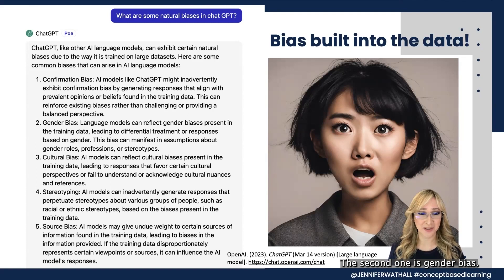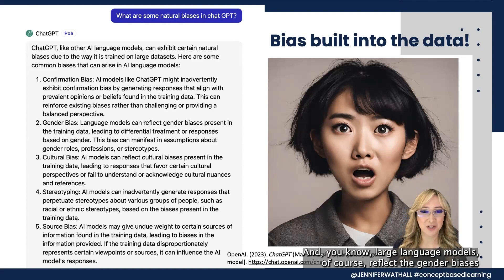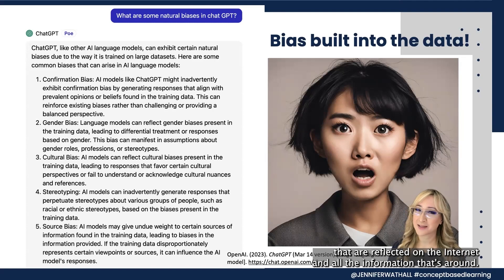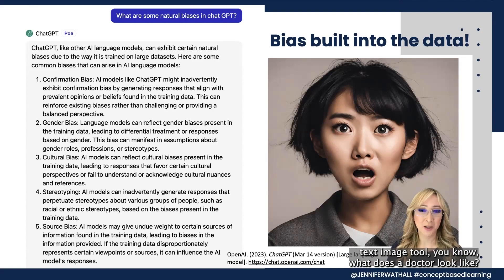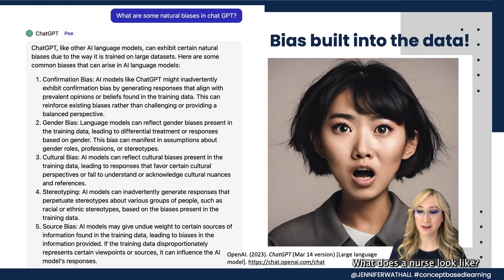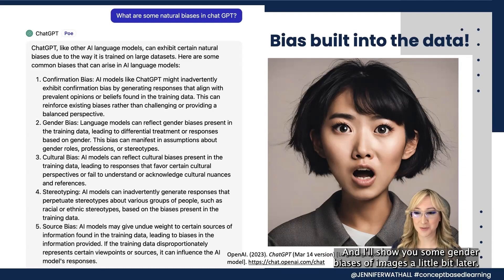The second bias is gender bias. Large language models reflect the gender biases found on the internet and in all available information. So if we were to ask a generative AI text-to-image tool what a doctor looks like, or what a nurse looks like, there are going to be some gender biases that come out. I'll show you some examples of gender-biased images a little bit later.